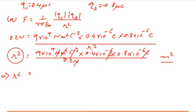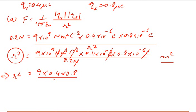Now dealing with the engineering quantities — numbers multiplied by orders of 10. I will take the numbers in front separately and then deal with the powers of 10 separately. The numerical part becomes 9 × 0.4 × 0.8 divided by 0.2.